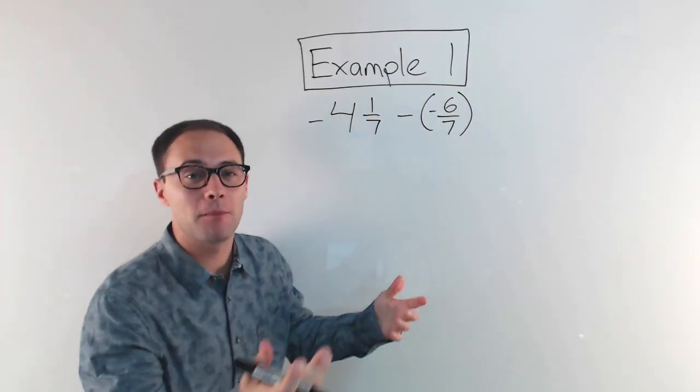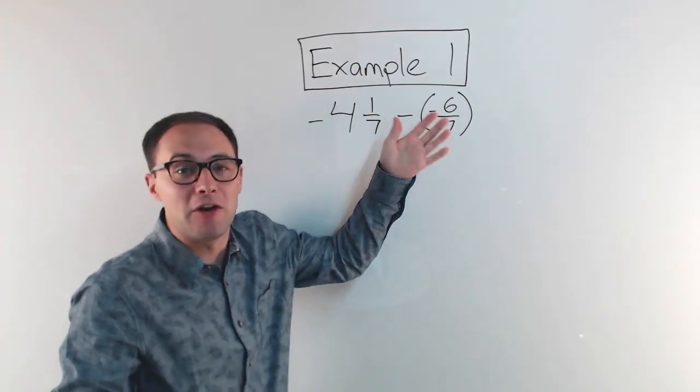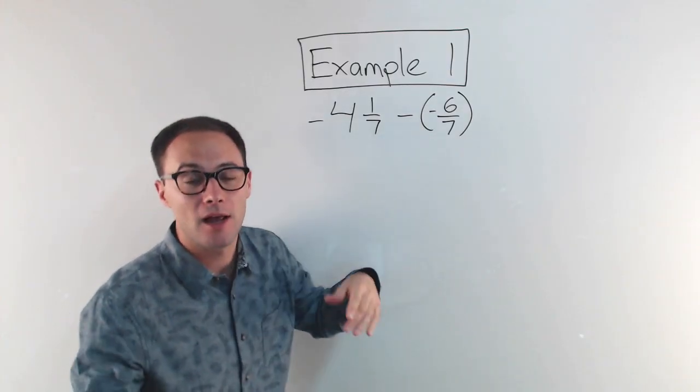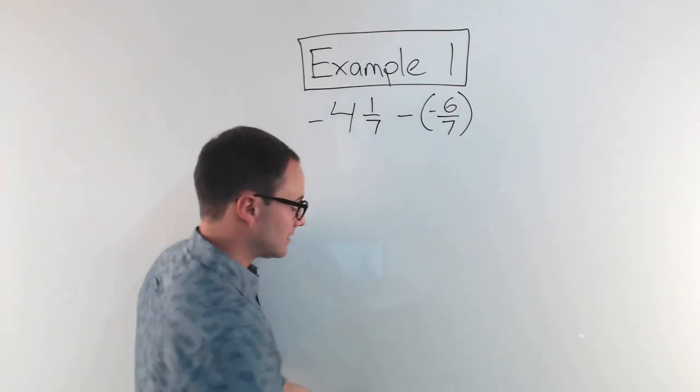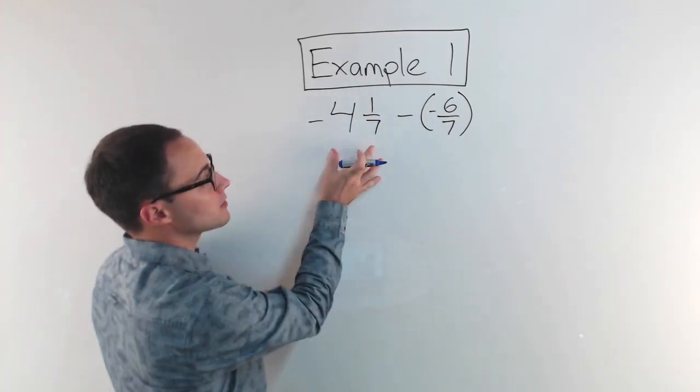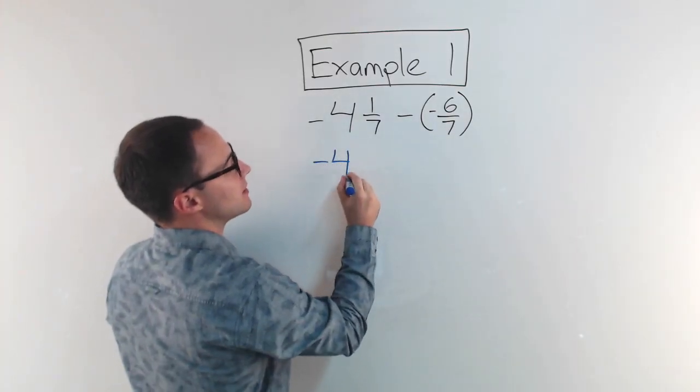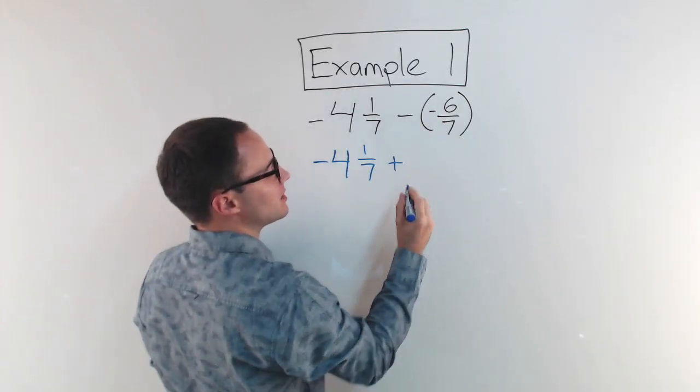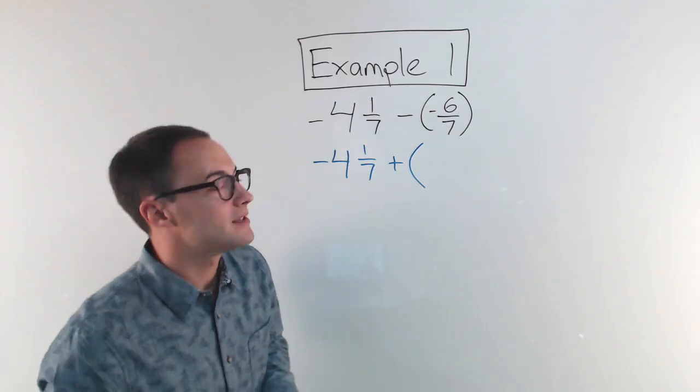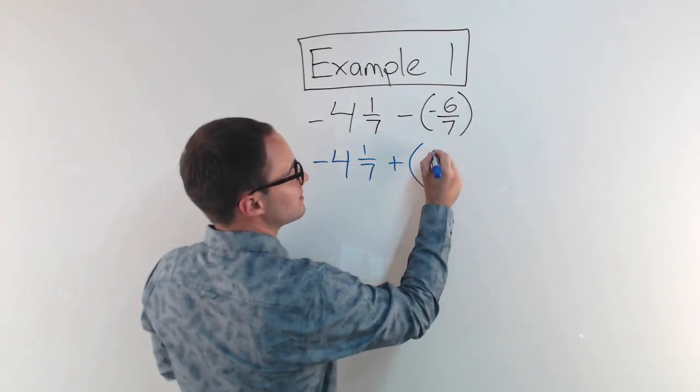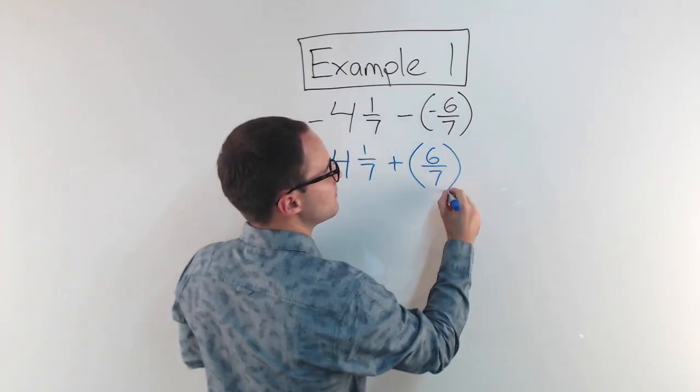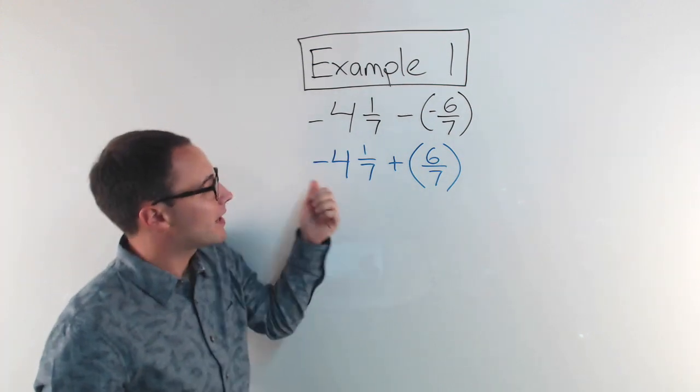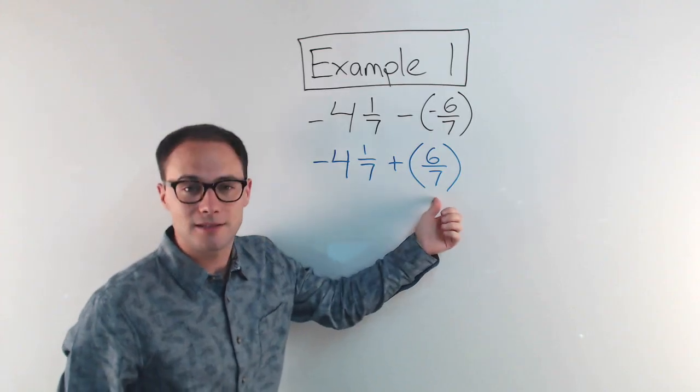Same thing we talked about before, subtracting a rational number or an integer, it doesn't matter, is the same thing as adding its opposite. So my first step is I'm going to change this to an addition problem. So negative 4 and 1/7 doesn't change. Subtraction becomes addition. The negative 6/7, the opposite of that is 6/7.